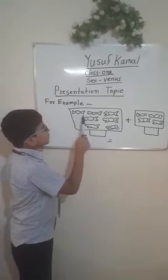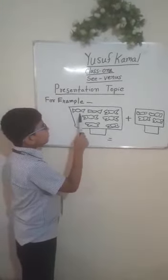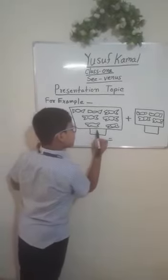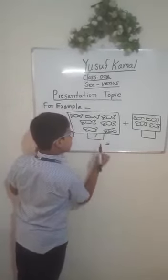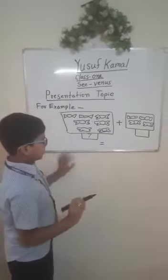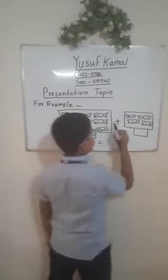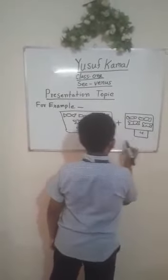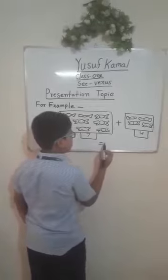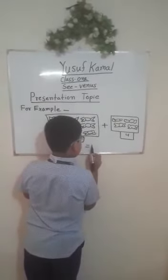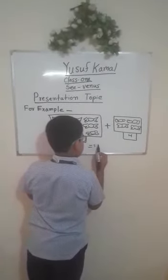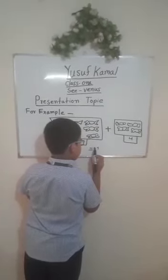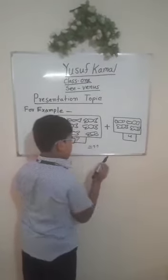One, two, seven and four. Two, equals two. Three, four.